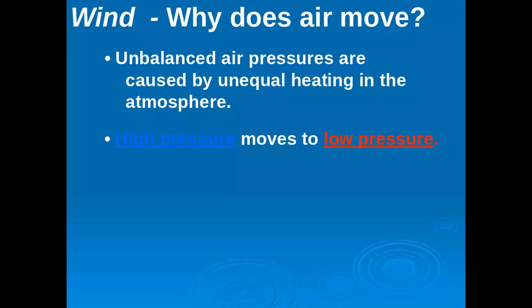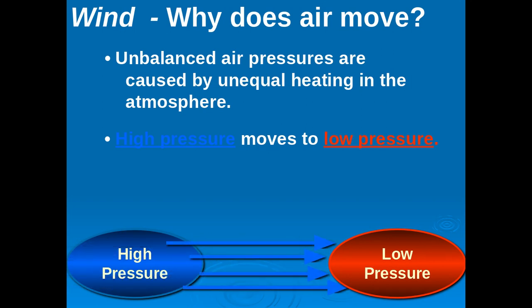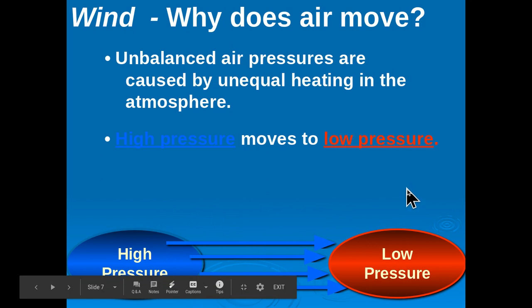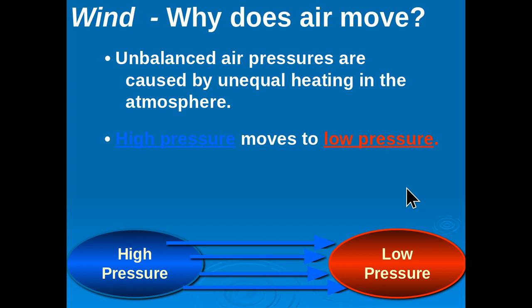Wind moves from high pressure always to low pressure. If you have a big ocean juxtaposed next to a continent, the continent heats up fast and cools fast, while the water heats up slow and cools slow — creating different pressure systems. As the air sinks in a high pressure system, it fills in the void left by the rising low pressure air, which creates the wind. Here's a cartoon image of the Beatles standing between a high pressure and low pressure system — what direction is their hair moving? Towards the low pressure.